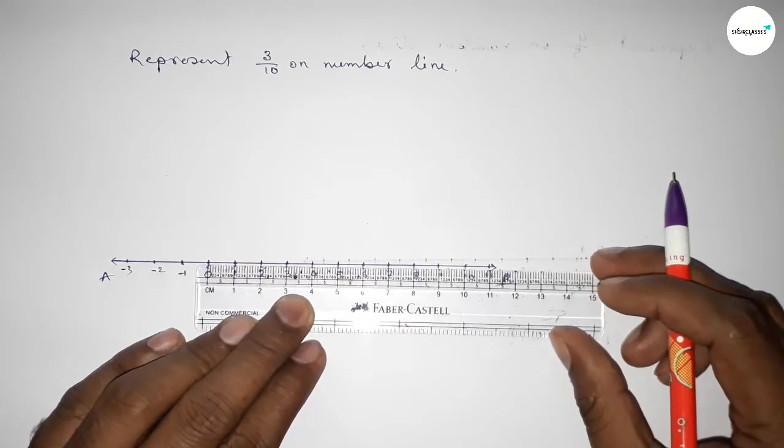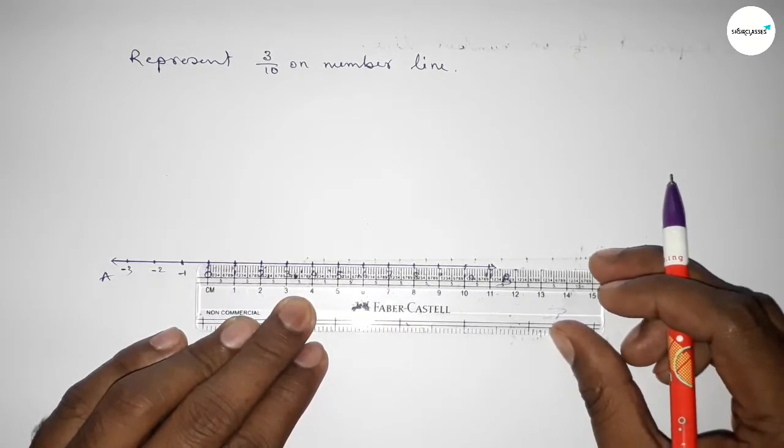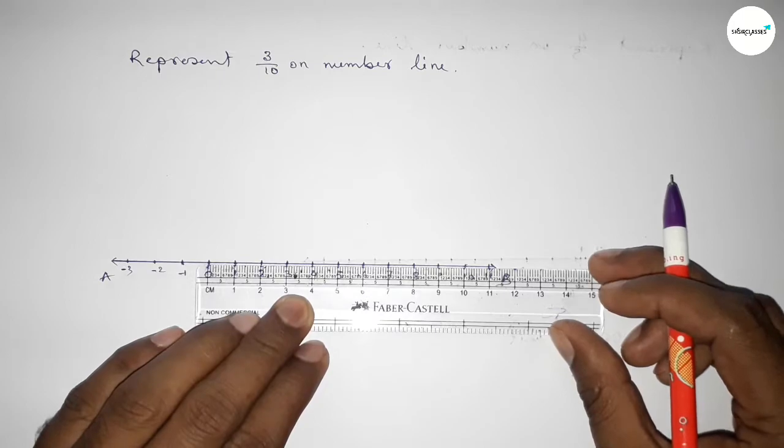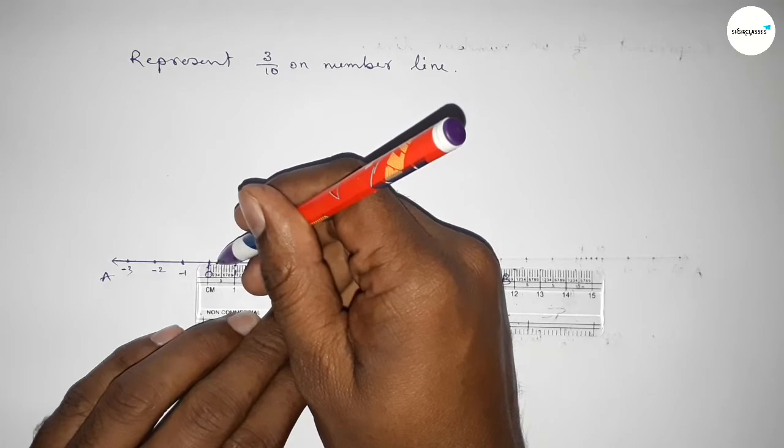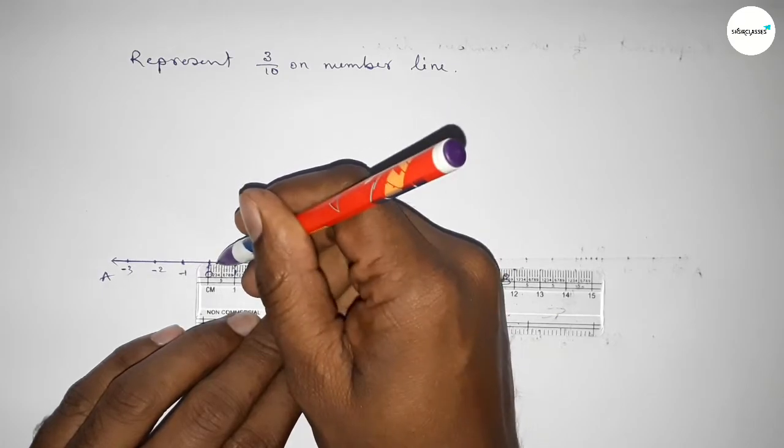Divide into 10 equal parts. If you divide the distance between any two numbers into 10 parts, then the length of each part equals 0.1. So this is 0, 0.1, 0.2, and this is 0.3.